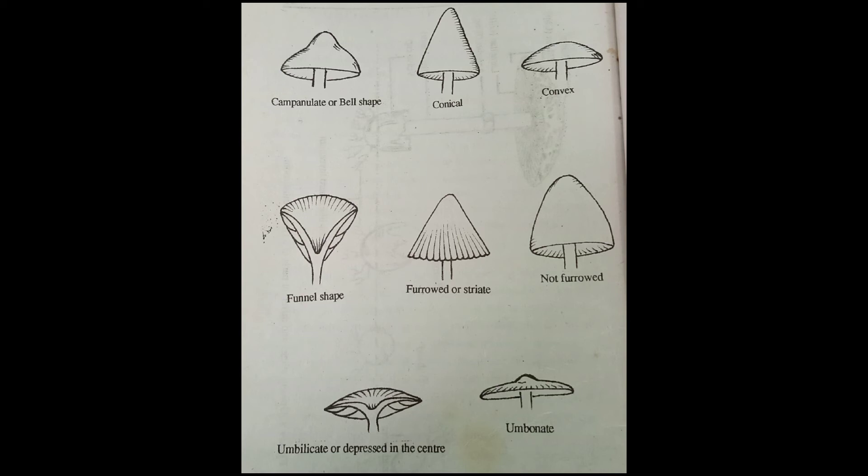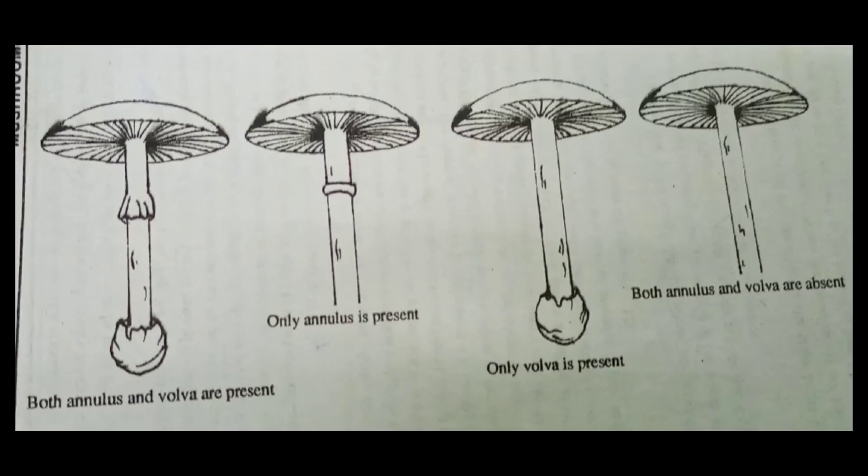The surface of the pileus may be smooth, hairy or rough. If some portion of the universal veil or vulva tissue remains on the expanded pileus in the form of a vestigial structure, they may be termed as scales. But if some portion remains on the stripe, it is known as the annulus, which is very delicate and can easily be rubbed off or washed away by rain. The vulva or universal veil is a cup-shaped structure surrounding the base of the stripe.